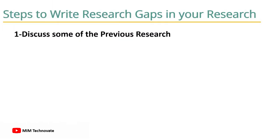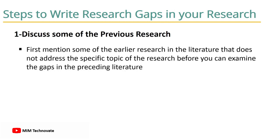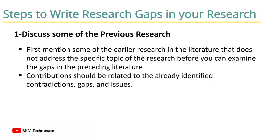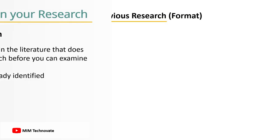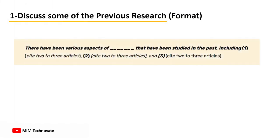Steps to write research gaps in your research. Step 1: Discuss some of the previous research. You must first mention some of the earlier research in the literature that does not address a specific topic before examining the gaps in the preceding literature. The contribution should be related to the already identified contradiction gaps and issues.